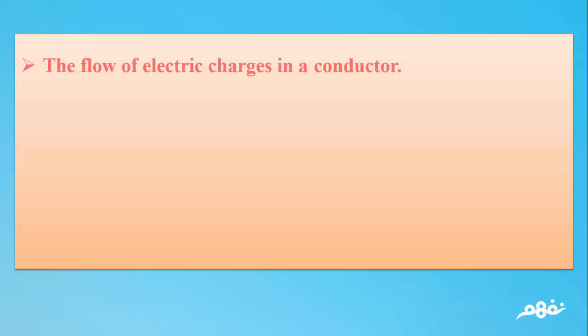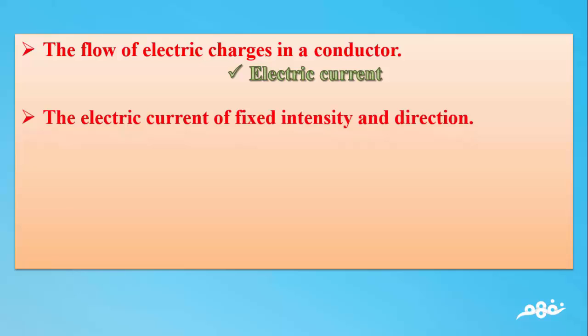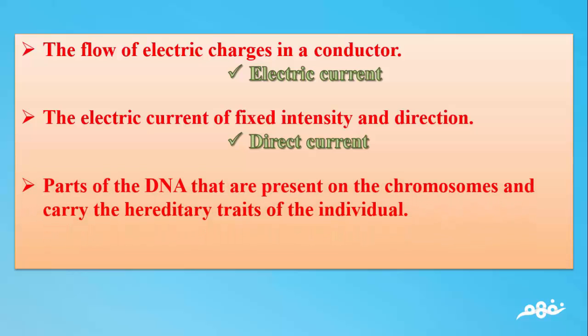Question 3: Write the scientific term. Number 1: The flow of electric charges in a conductor. The answer: Electric current. Number 2: The electric current of fixed intensity and direction. The answer: Direct current. Number 3: Parts of the DNA that are present on the chromosomes and carry the hereditary traits of the individual. The answer: Genes.